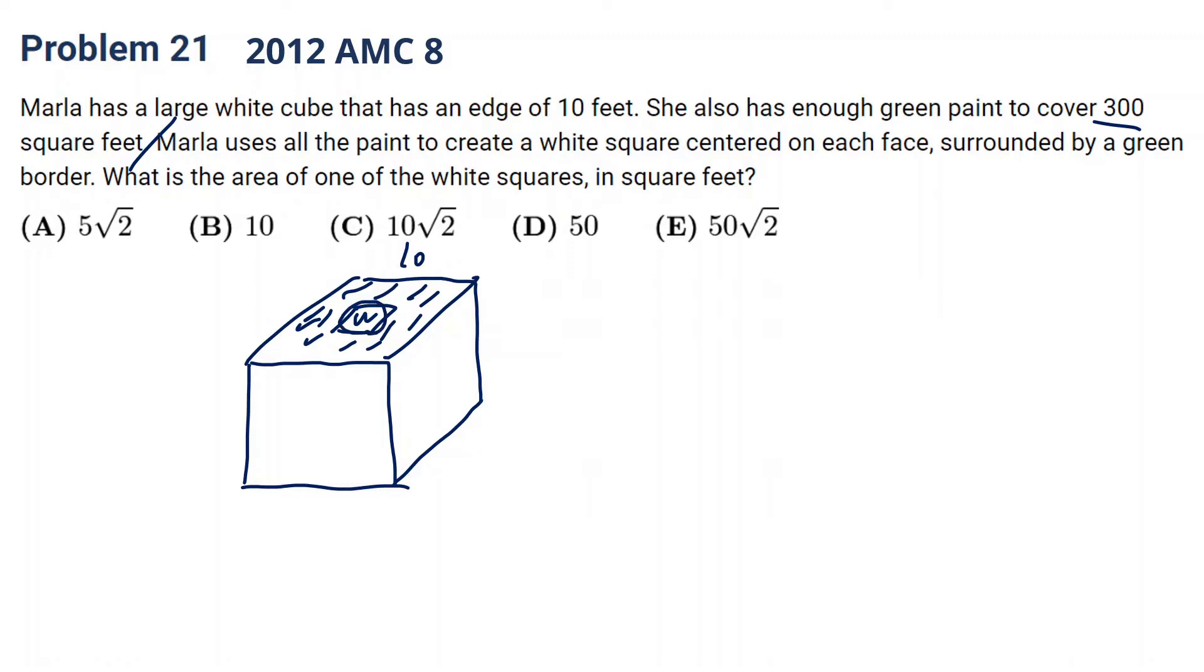So we want to find out the area of the white. So for green, we can cover 300 area of green divided by 6. So each green area on each face will be 50. And the total area of each face is 100. 10 times 10 is 100. So 100 minus 50 will be 50. That's the white area in the center. This one is relatively easy.